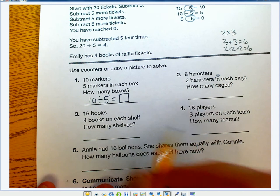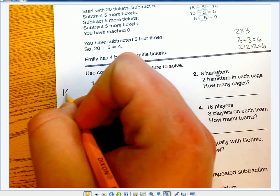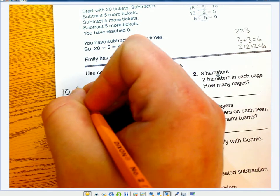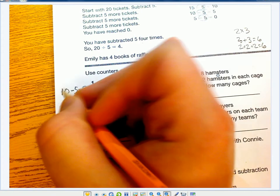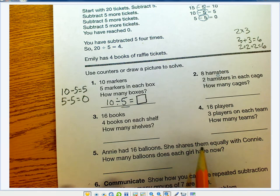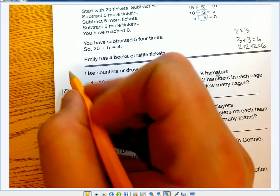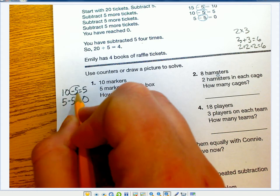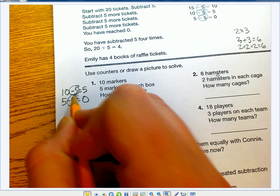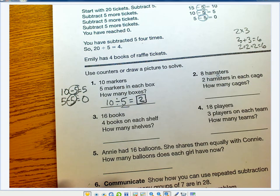I'm going to subtract 5 from 10 as many times as it takes to get to 0. So 10 minus 5 equals 5, and 5 minus 5 equals 0. The number I'm subtracting is 5, and I count how many times it took to get to 0: 1 time, 2 times. So 10 divided by 5 equals 2.